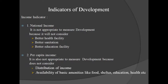How to measure development? What is the measuring rod? Can we take national income as the measuring rod — higher national income developed, lower national income underdeveloped? No. It is not appropriate to measure development because it will not consider health facilities, sanitation facilities, or education facilities. National income may be more but facilities may not be there, so we cannot consider only national income.